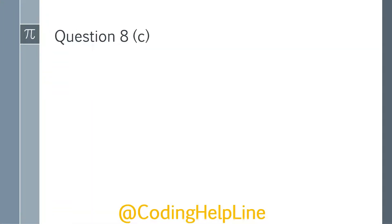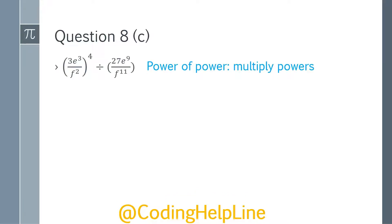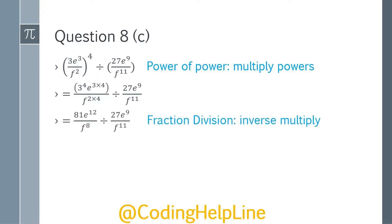Let's go to question 8c. We are given parenthesis (3e³ / f²) overall to the power 4, divided by parenthesis 27e⁹ and f¹¹. We apply the rule of power of power 4 and expand the parenthesis. So we will have 3 power 4, e³ multiplied by 4, and f² multiplied by 4. After simplification, 3 to the power of 4 becomes 81, e³ multiplied by 4 becomes e¹², and this becomes f⁸.